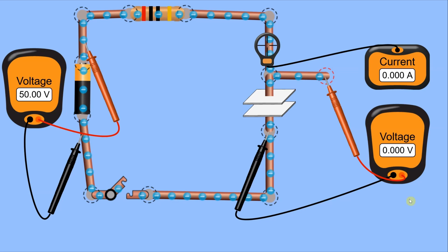There are four things I want you to consider when thinking about the relationship between voltage and current in a capacitor. In this simulation we have a voltage source at 50 volts, and on the other side a capacitor that's going to charge. We also have a resistor in this circuit to limit the amount of current that can flow, an ammeter to show us the current, and a voltmeter to show us the voltage across the capacitor. There's also a voltmeter measuring the voltage across the battery — a constant 50 volts.